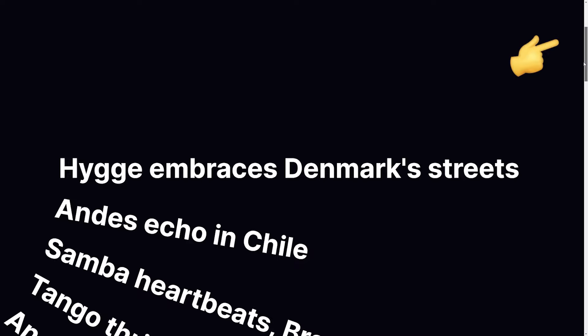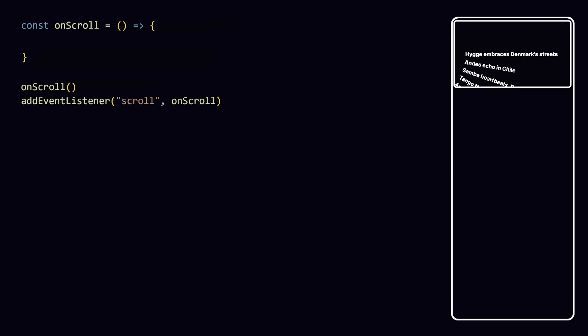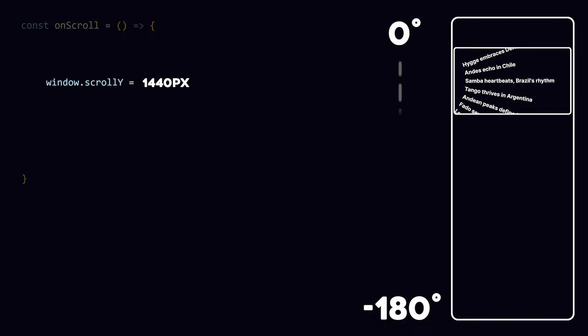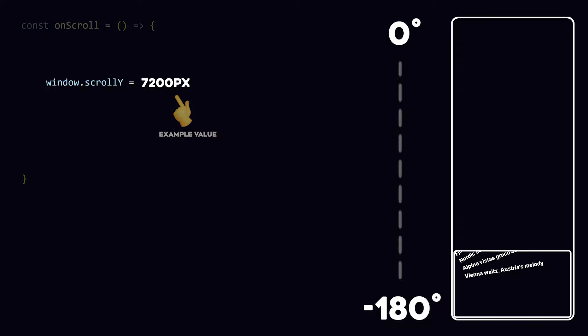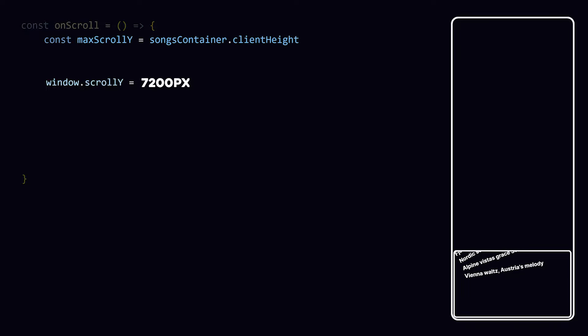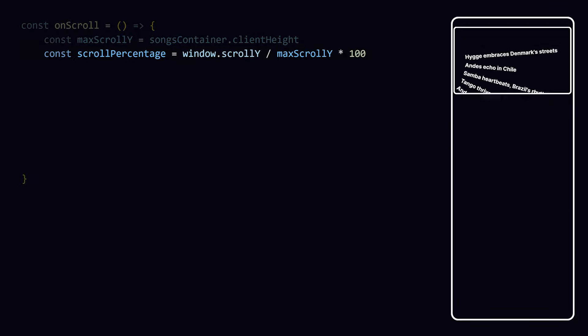The scrollbar currently seems to do nothing, so let's add a scroll handler. We want to animate the rotation when the user scrolls — and that's actually based on the current scroll position. An actual pixel value on its own is not very useful, but since we know the height of the entire container we can calculate the scroll progress inside the container as a percentage.